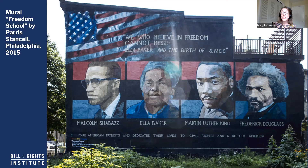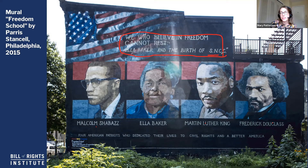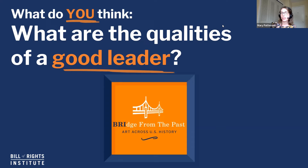I'm leaving you with an image of a mural in Philadelphia, which puts Ella Baker next to Martin Luther King Jr., Malcolm X, and Frederick Douglass. It's Ella Baker who is quoted here: 'We who believe in freedom cannot rest.' It refers to Ella Baker and the founding of the Student Nonviolent Coordinating Committee, or SNCC. Down here she's called a patriot who dedicated her life to civil rights and a better America. We started by asking who was Ella Baker, and we learned that she played an important role in three of the 20th century's major civil rights organizations: the NAACP, the SCLC, and SNCC. She continued her activism until her death.